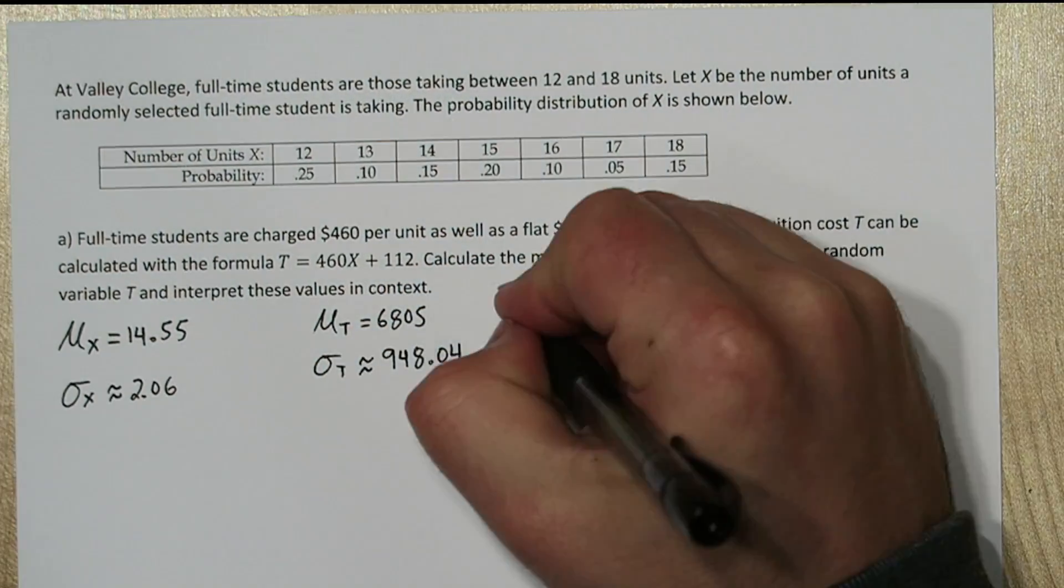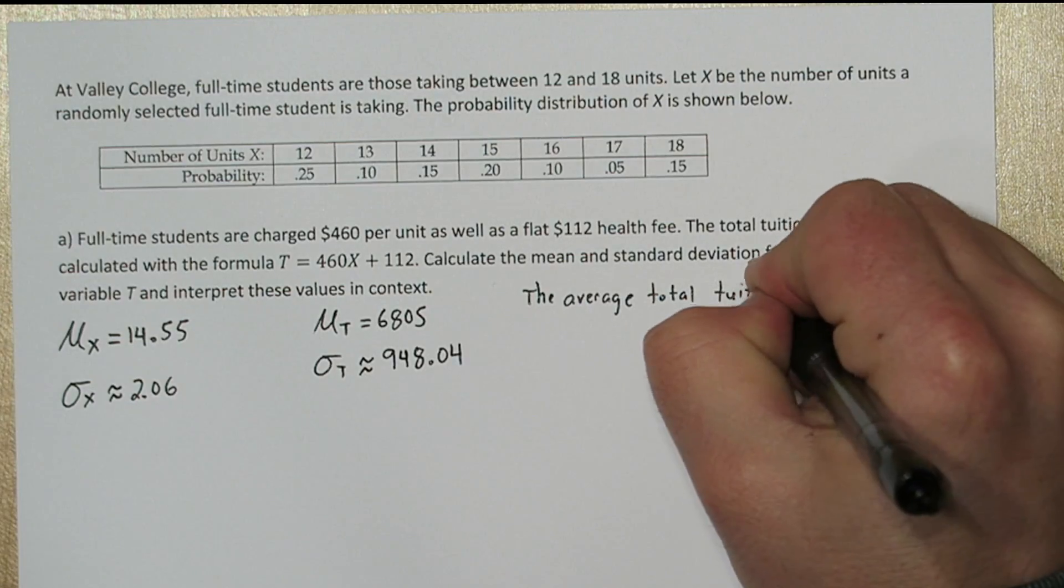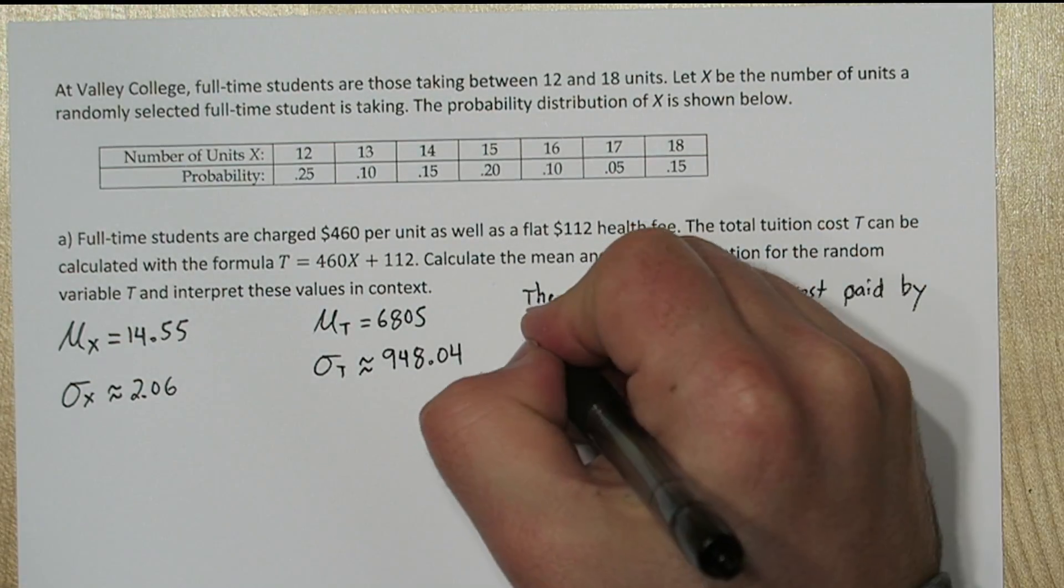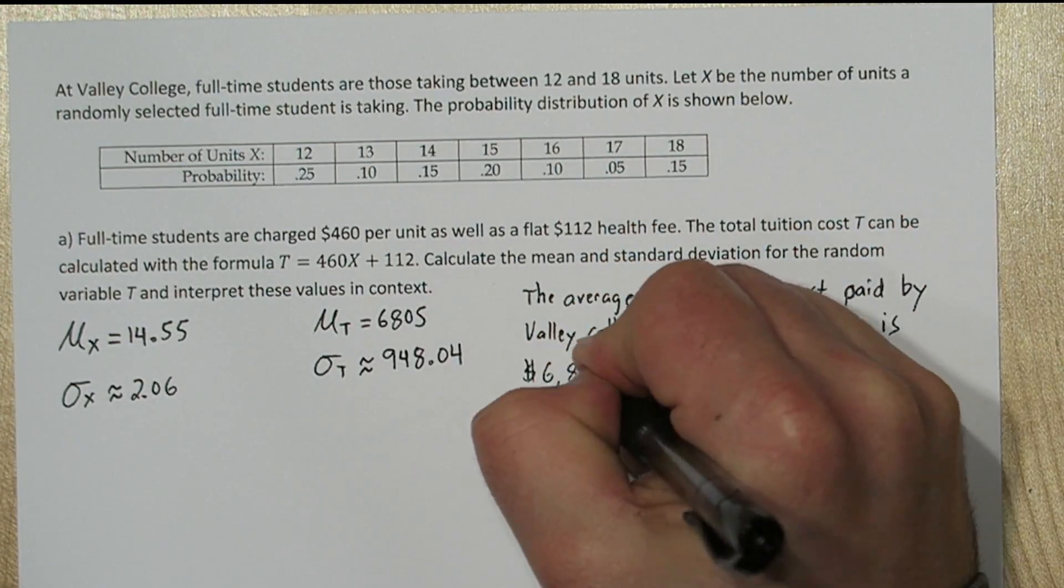To interpret the mean, we'll say the average total tuition cost paid by a Valley College full-time student is $6,805.